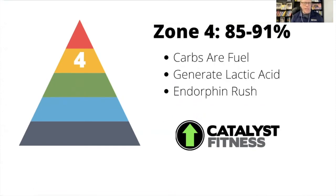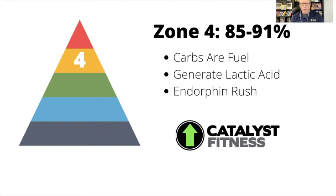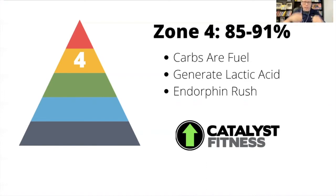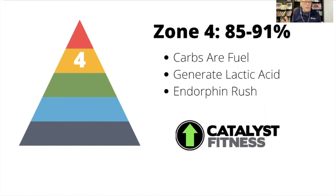In zone four things start to get pretty intense. You're working really hard, primarily burning carbs because you can't break down fat fast enough. You're generating lactic acid — if you're doing a CrossFit workout like 50 air squats and your legs start burning, you're probably in zone four. This zone will improve your cardiovascular capacity quite a bit, and you'll get an amazing endorphin rush when you're done. You enter zone four when you're trying to beat a previous time, climb a hill faster, or rise to meet a personal best — it's when things get really interesting and fun.